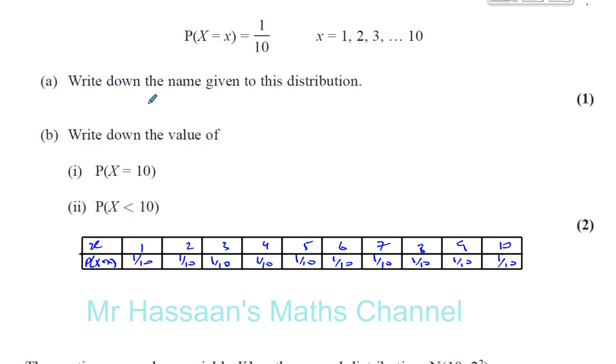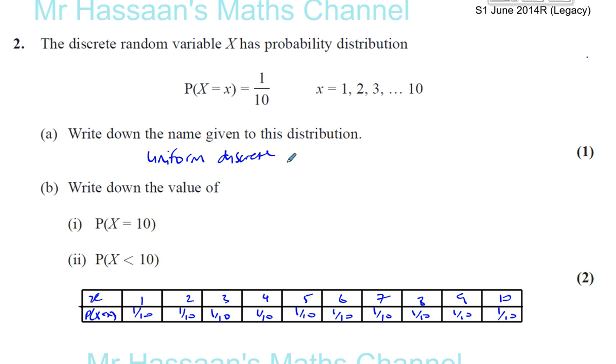And this is basically called a uniform discrete distribution. Uniform discrete distribution. That's what it is. The important word here is uniform. It's the same. Every one of them has the same probability.